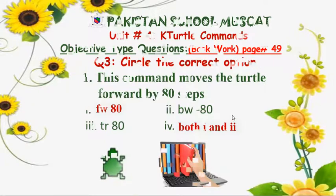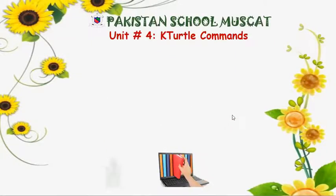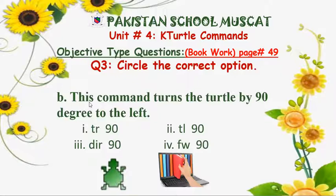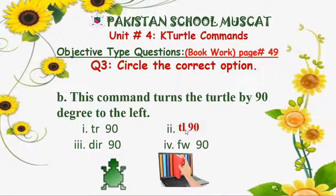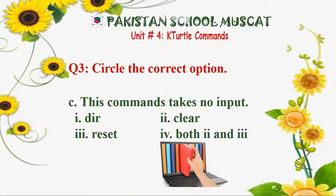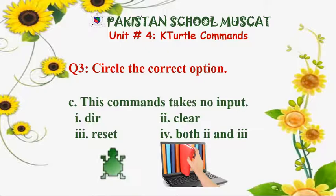Part B: this command turns the turtle by 90 degrees to the left side. The options are tr 90, tl 90, dir 90, or fw 90. Since we are turning to the left-hand side by 90 degrees, we will be using the tl command. The second option, tl 90, is the correct answer — you can put a circle or tick next to it.